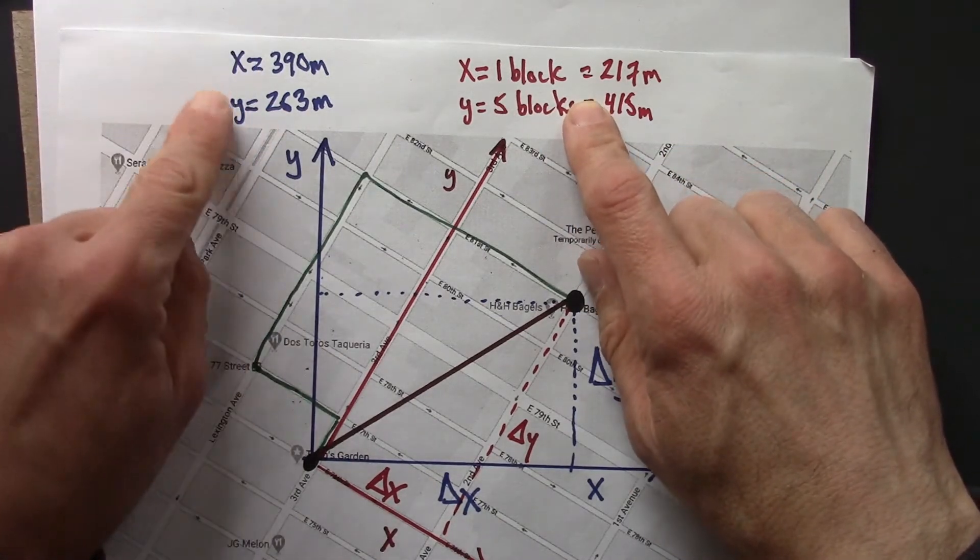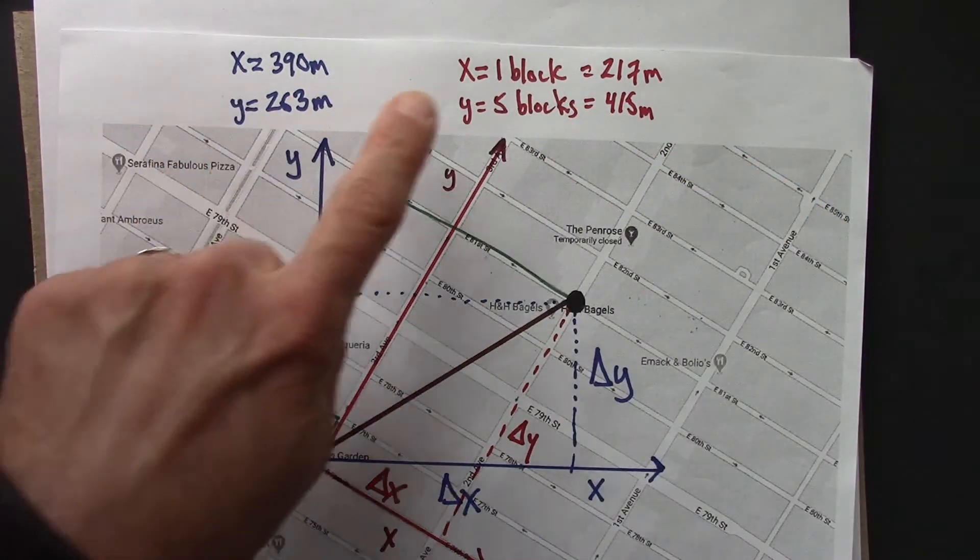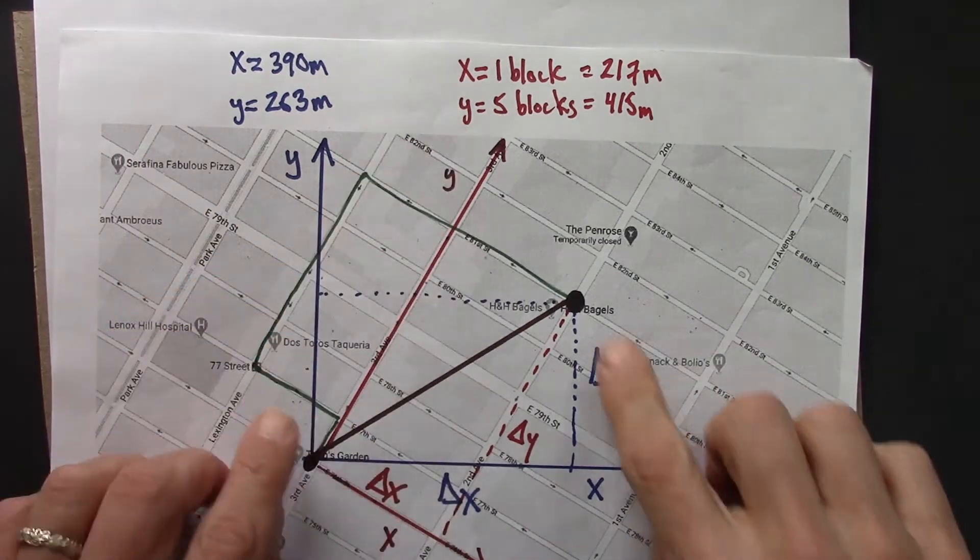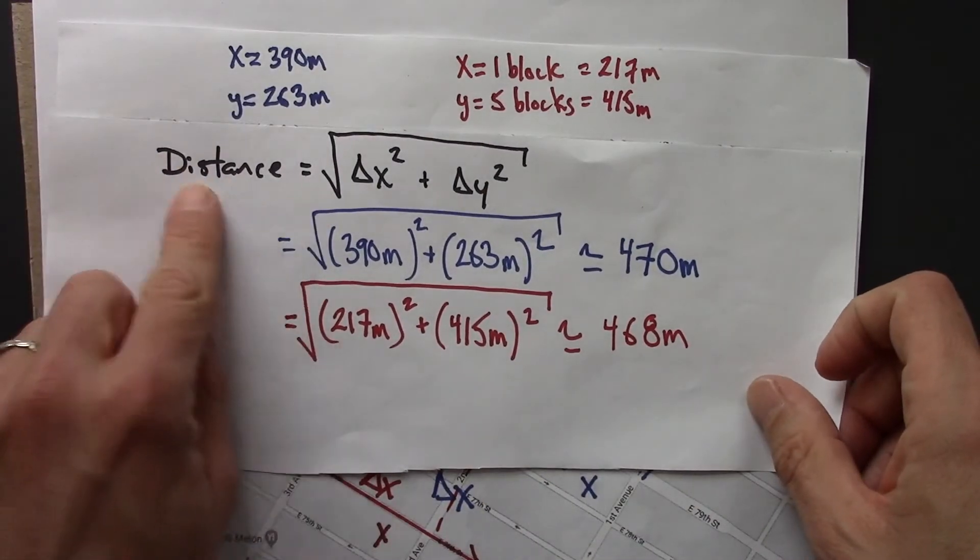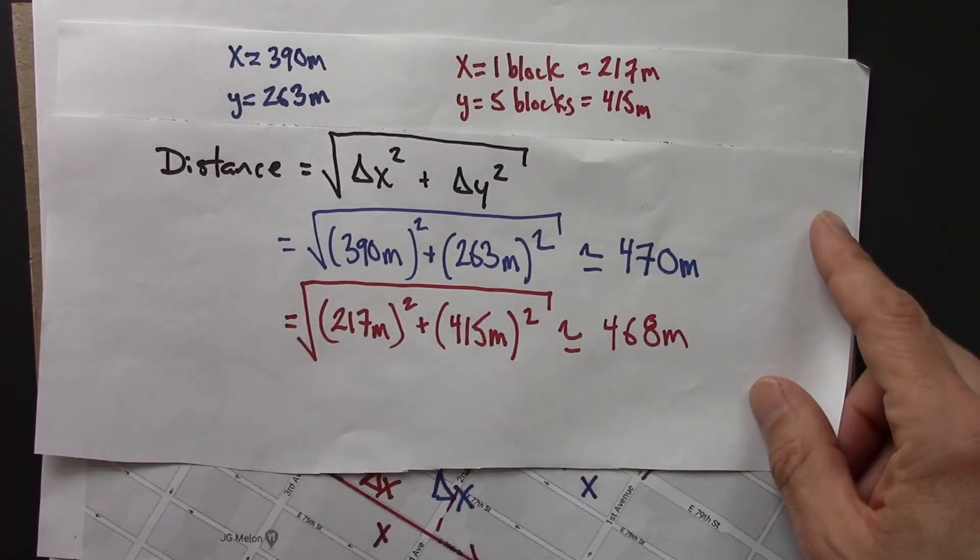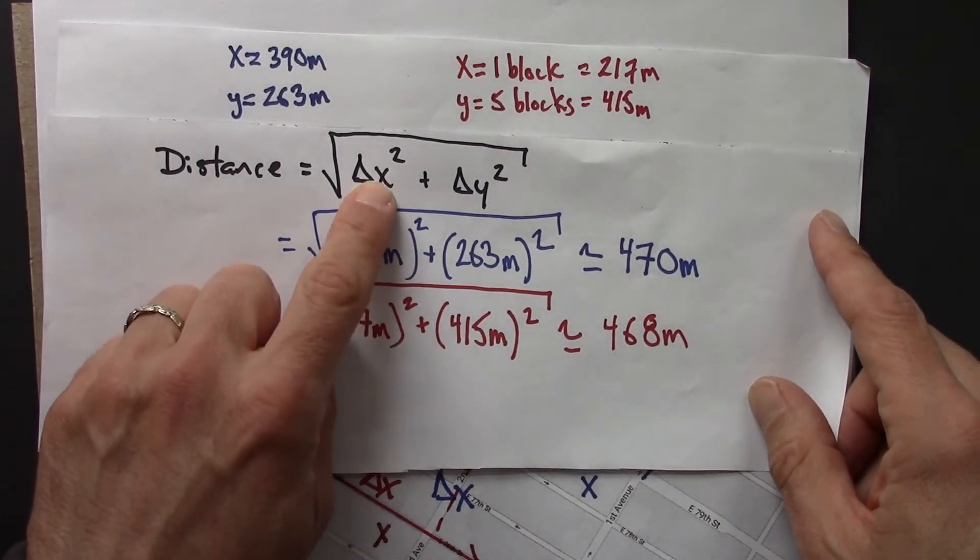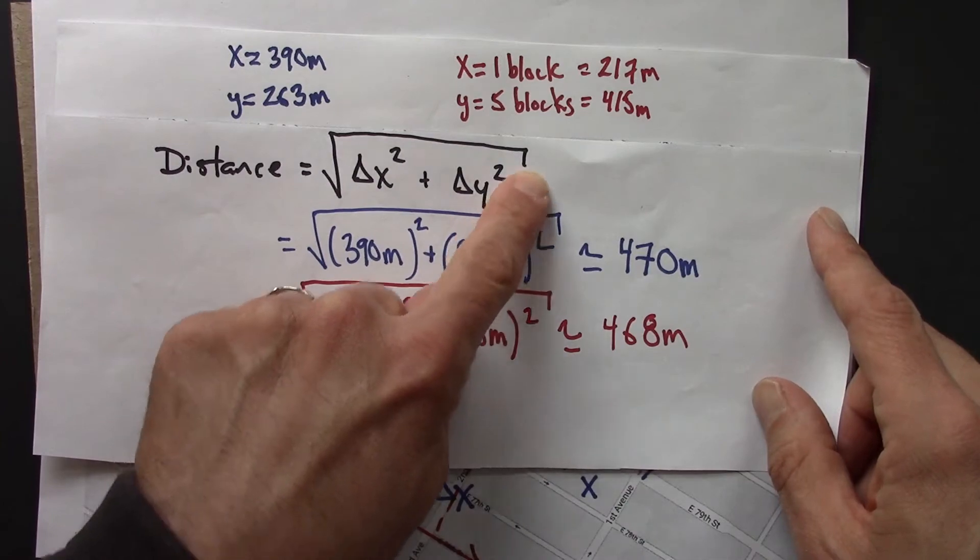But if both blue calculates the distance and red calculates the distance, they get the same thing. And we did that calculation out. The distance formula is the Pythagorean theorem: delta x squared, delta y squared, square root.